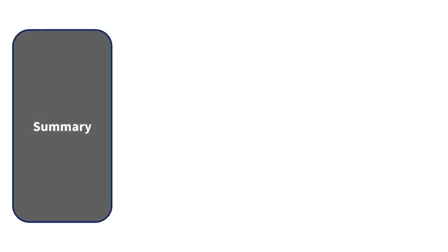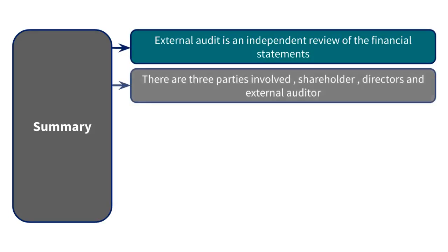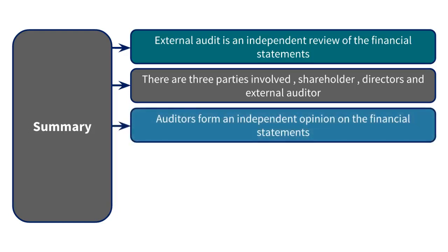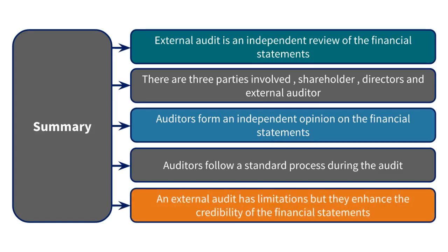To summarise, an external audit is an independent review of the financial statements. There are three parties involved: the user of the financial statements such as the shareholder, the provider of the financial information, and the external auditor performing an independent review. Auditors form an independent opinion on whether the financial statements are true and fair and properly prepared. Auditors follow a standard process to ensure they form the correct opinion. An external audit has limitations, but it enhances the credibility of the financial statements and helps improve confidence in the client's operations.